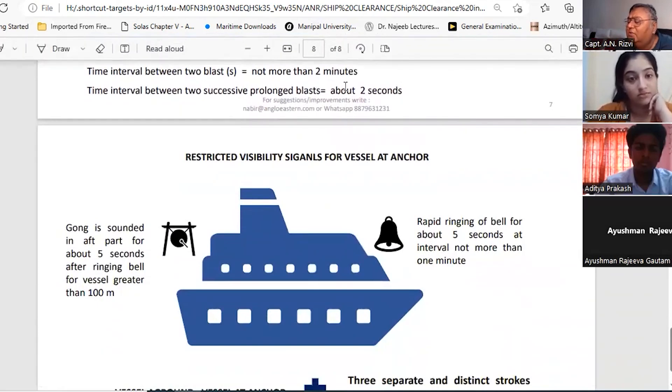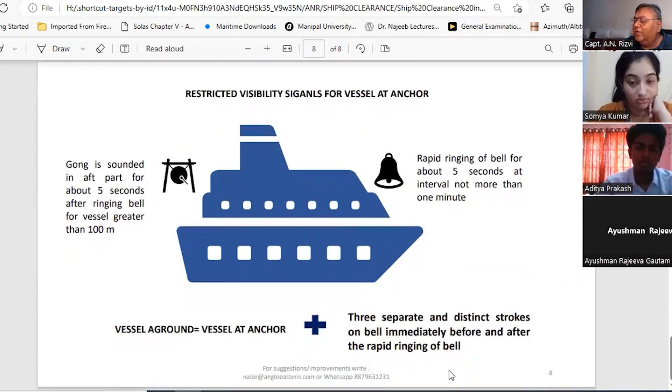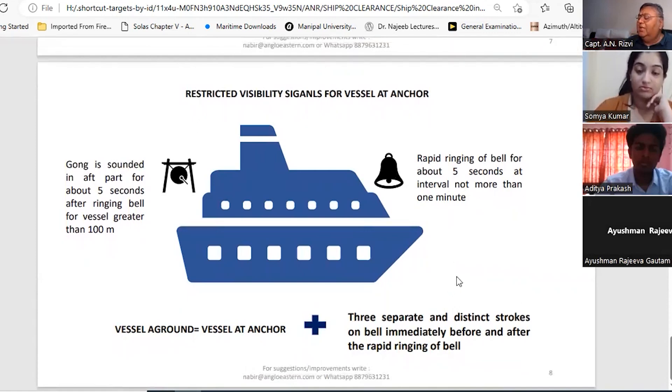The interval between the two blasts is not more than two minutes in restricted visibility. For vessels at anchor, very simple - rapid ringing of bell for five seconds at intervals not more than one minute. Then gong - if the vessel is 100 meters or more, then gong is sounded in the after part for about five seconds after ringing the bell. What is the difference for vessel aground? Vessel aground means it is the same as the vessel at anchor, but three separate and distinct strokes, one upon the bell, immediately before and after ringing of bell.